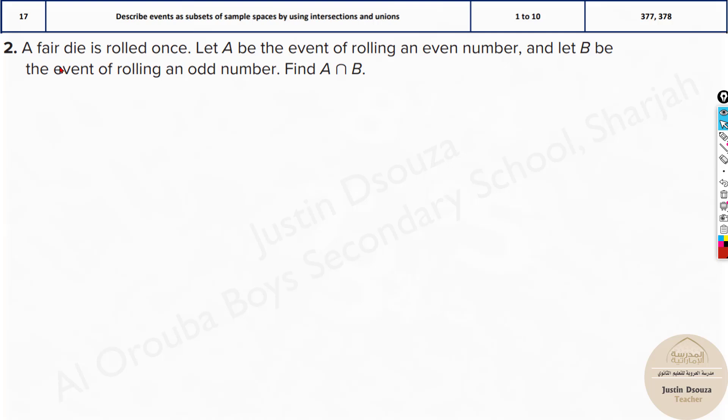Similar problems are there. Please do try this. Here I will just quickly walk through this. A fair die is rolled once. Let A be the event of rolling the even number and B be the event of rolling odd number. Now look at this. We have even and odd. Is there any number which is both even and odd? No. Even numbers are 2, 4, 6, 8 and odd numbers are 1, 3, 5, 7 and so on. But here since we are just rolling a die, the maximum can be capped till 6.